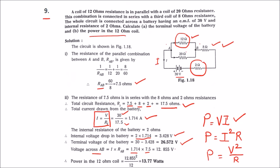Using the formula P = V²/R, the power across the 12 ohm coil is 12.855² divided by 12, which gives 13.77 watts.